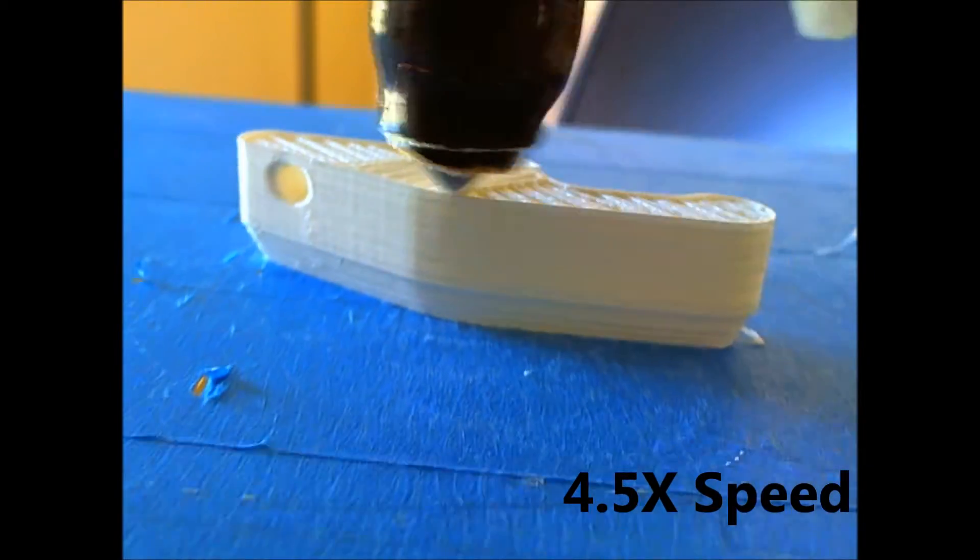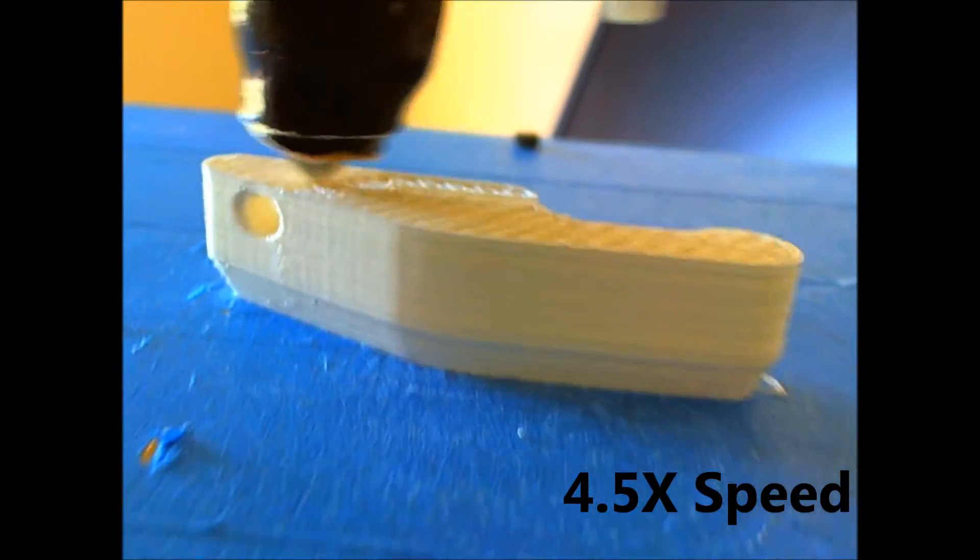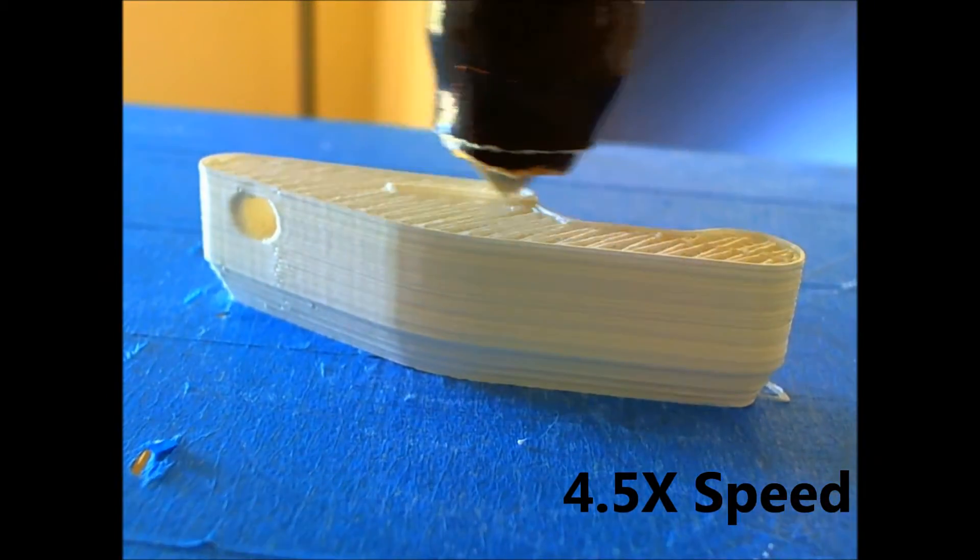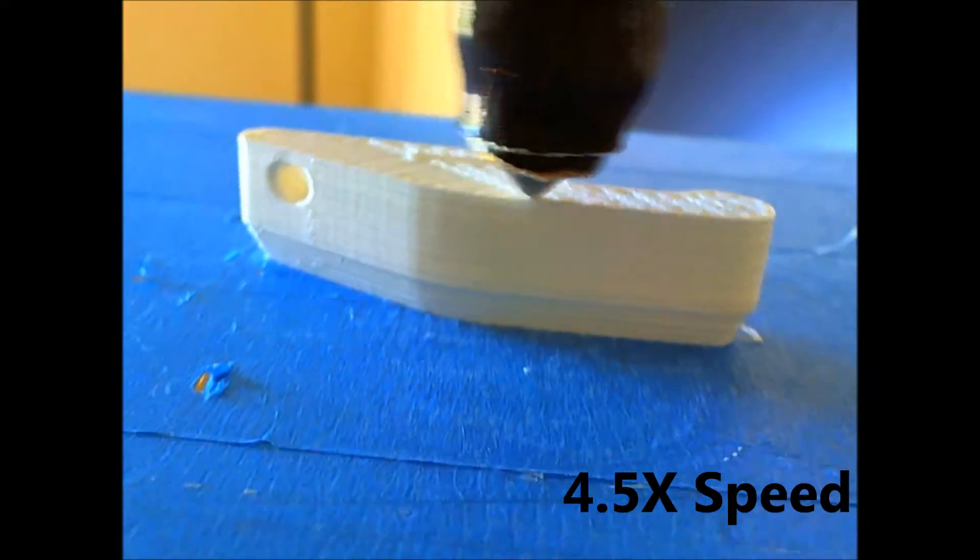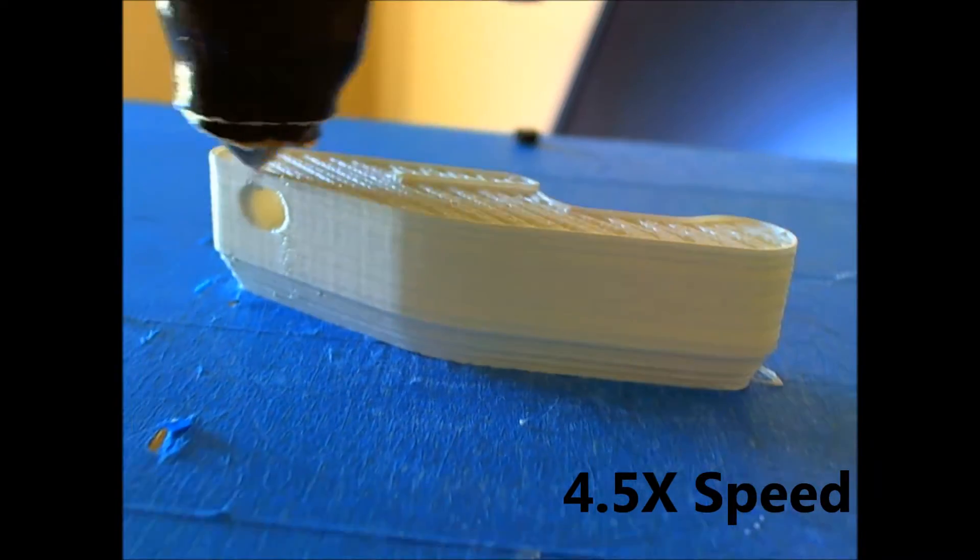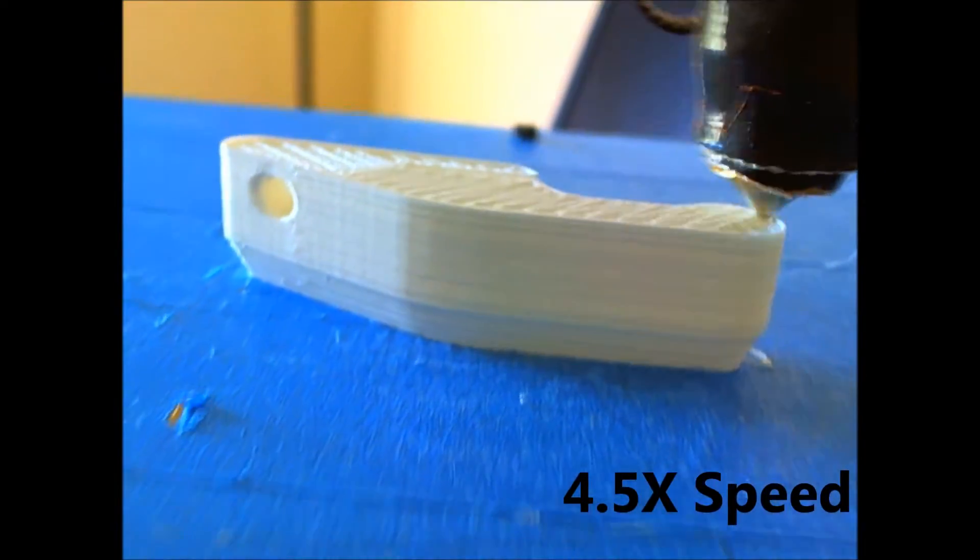In May 2008, RepRap achieved replication for the first time. This parent machine made a complete set of parts that were then used to build this child machine. The child machine was immediately put to work making grandchild parts.